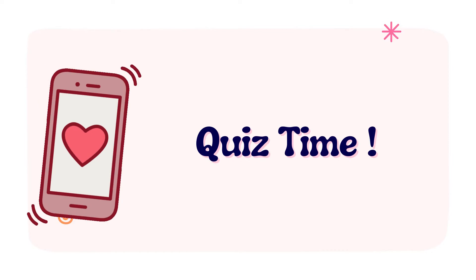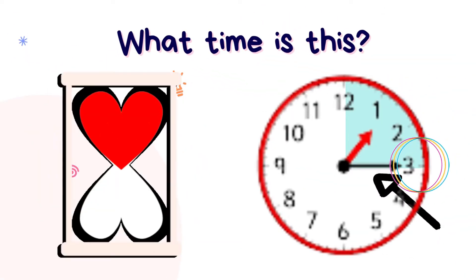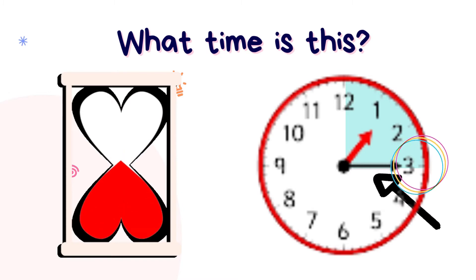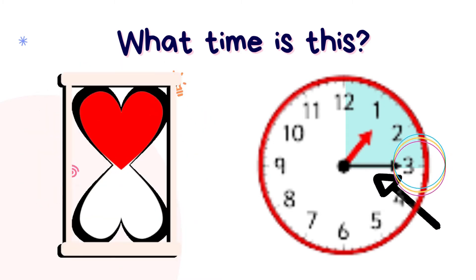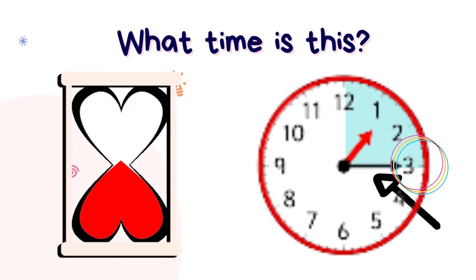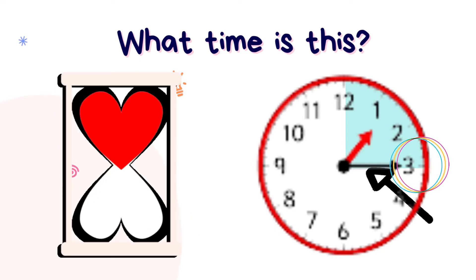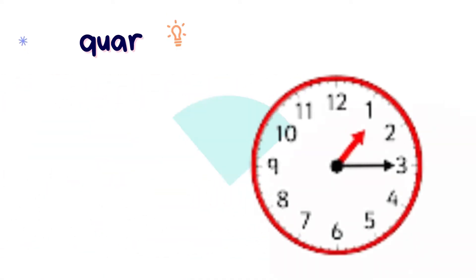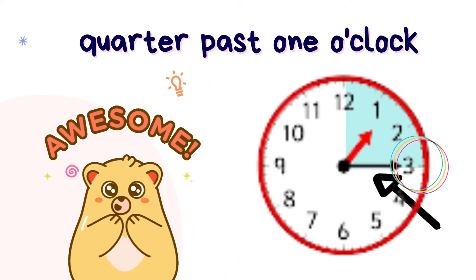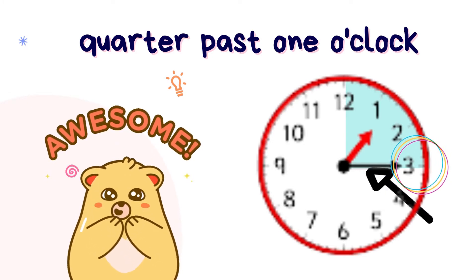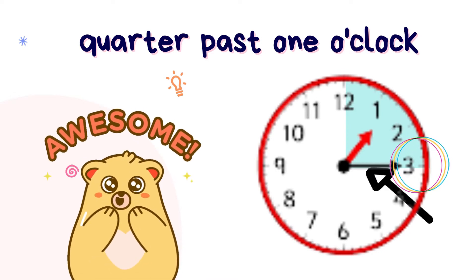It's quiz time! Do you still remember how to tell the time of this clock face? Look carefully at the shaded portion on the clock face. The minute hand is pointing to number 3, and the hour hand points past number 1. Let's check the answer — it's quarter past 1 o'clock.